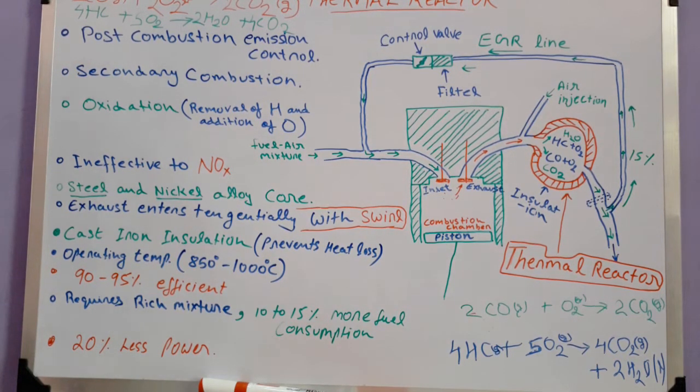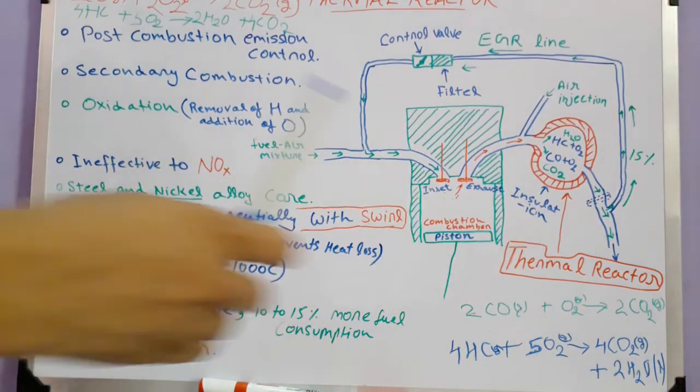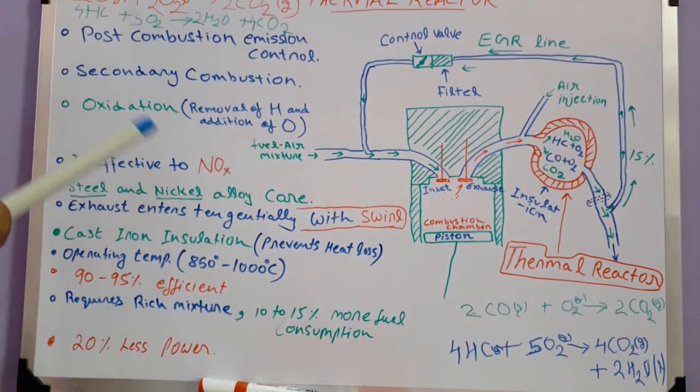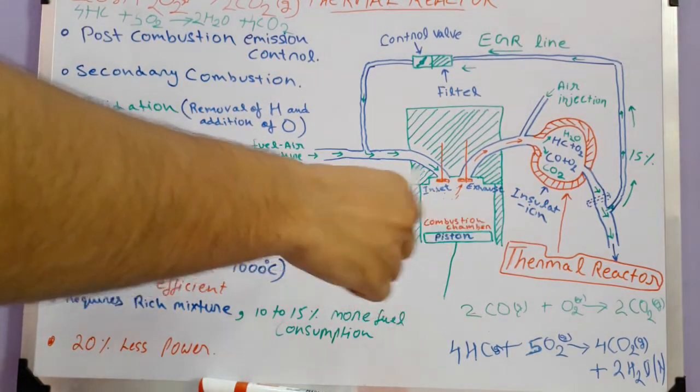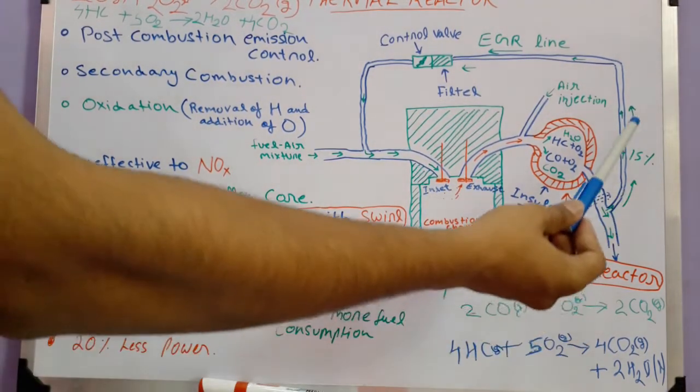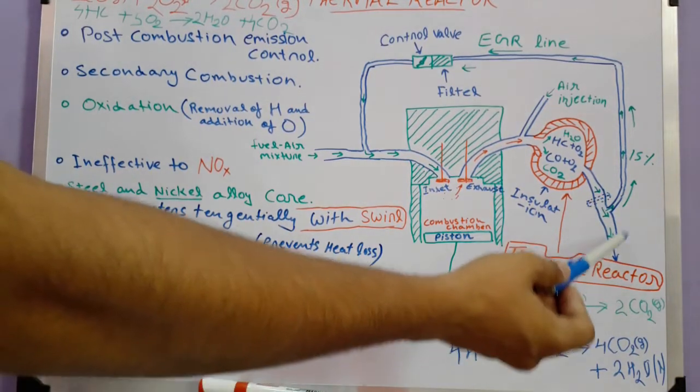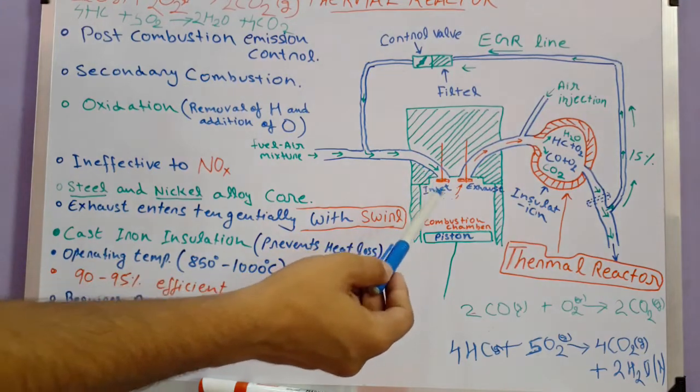To control nitrogen oxides, an exhaust gas recirculation (EGR) system is used, which reduces the combustion temperature inside the cylinder so that nitrogen oxide formation can be minimized. 10 to 15 percent of the combustion product is taken by the EGR system and goes to the intake manifold into the main combustion chamber, which reduces combustion temperature and controls nitrogen oxide formation.